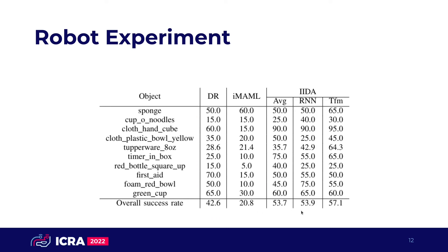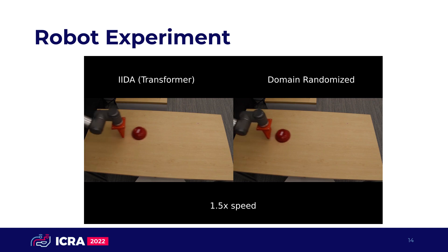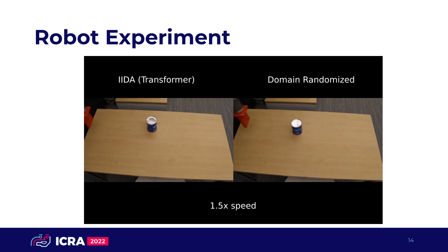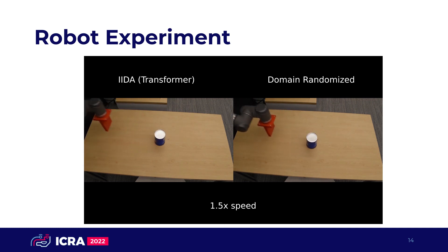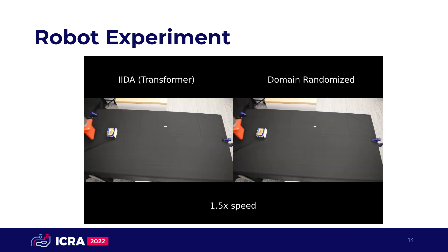We test by trying to slide 10 novel test objects to 20 goal locations on the table. We can see that IDA is able to adapt its model and select better actions, leading to a higher success rate over the baseline. Here, we visualize slides with both IDA on the left and domain randomization on the right with the same goals. IDA still makes some errors, but is generally able to slide closer to the specified locations.